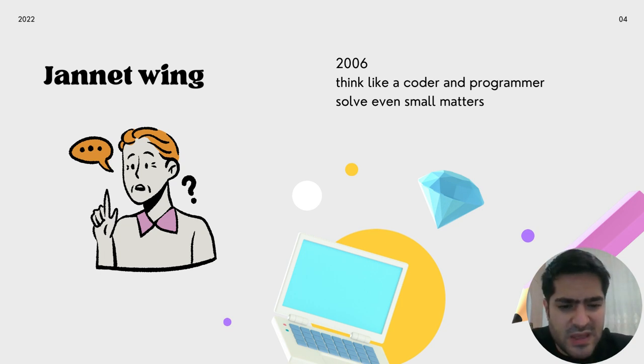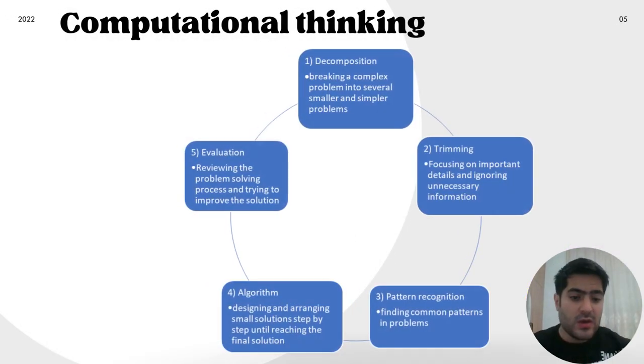But Janet Wing says, we're not talking about mathematics. We're not talking about science. We're talking about all life, all aspects of life and what we can do with it. It's a way of thinking. It's not a way of coding or programming. It's how you can think and how you can look at the problems at your hand.